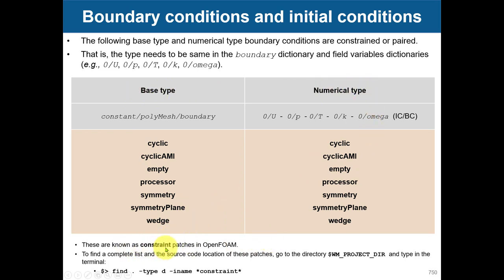Just to remind you, you have these constraint patches. You have base type and numerical types. When you are using these constraints, they are exactly the same in all the files. Most of the time you are going to use empty, cyclic, and symmetry. The processor type is used when running in parallel and is done automatically by the solver.